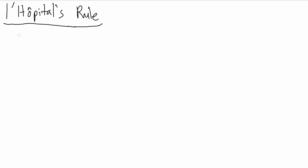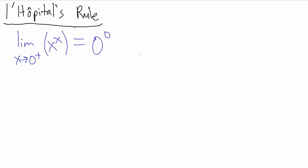Let's take a look at another example of using L'Hôpital's rule. We're going to do the limit as x goes to 0 from the positive side of x to the x. If we do direct substitution like we always want to do first, as x goes to 0 from the positive side this whole expression goes to 0 raised to the 0, which is one of our indeterminate forms. But that tells us we can use L'Hôpital's rule — though we can't use it directly because we got 0 to the 0, not 0 over 0 or infinity over infinity.